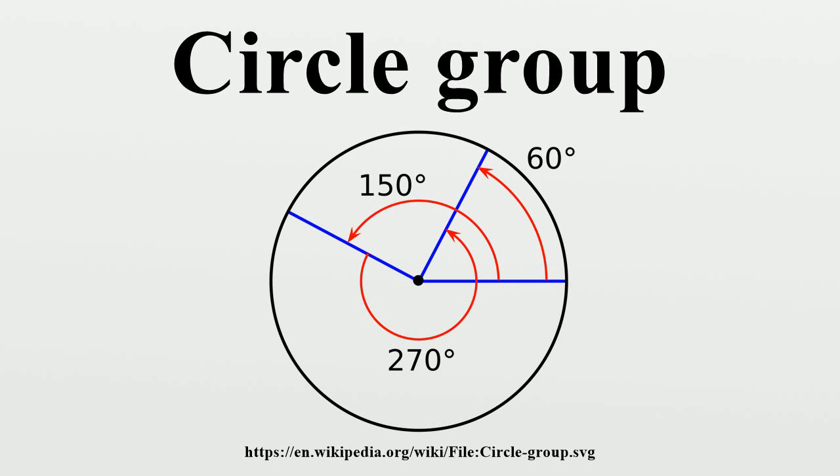In this section we will forget about the topological structure of the circle group and look only at its structure as an abstract group. The circle group T is a divisible group. Its torsion subgroup is given by the set of all Nth roots of unity for all N, and is isomorphic to Q/Z.